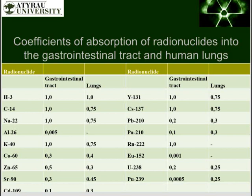Many radionuclides, even after contact with intact skin, can penetrate the protective layer and be carried throughout the body with the flow of lymph and blood. The rate of penetration depends on the type of chemical compound, the volatility of the elements, the temperature of the medium, and other factors.